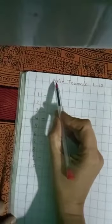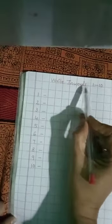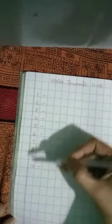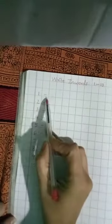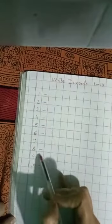First what you have to do children, first write the heading, write inverse 1 to 10. Then write down the numbers 1 to 10 in order and put a small dash everywhere.